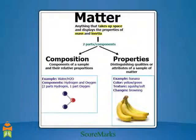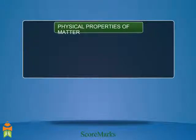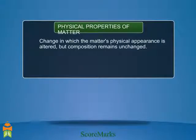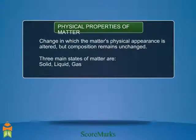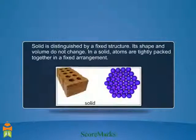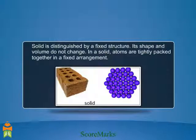These properties are generally grouped into two categories: physical or chemical. Physical properties of matter are defined as changes in which the matter's physical appearance is altered but composition remains unchanged. Solid is one of the three main states of matter, distinguished by a fixed structure — its shape and volume do not change, and atoms are tightly packed together in a fixed arrangement.